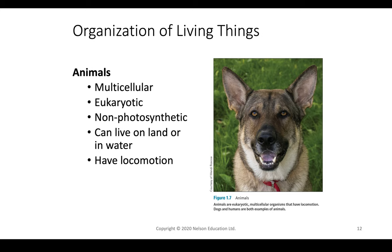Animals are a super diverse group of multicellular eukaryotic organisms that are non-photosynthetic — they are not able to create their own energy from sunlight. We get energy from exogenous sources: plants or other animals we eat. An organism that eats plants is called an herbivore; one that eats animals is a carnivore. We as humans are omnivores — we can derive energy from both plants and animals. Animals are also able to live on land or in water, and they have locomotive capability, something that plants do not have.